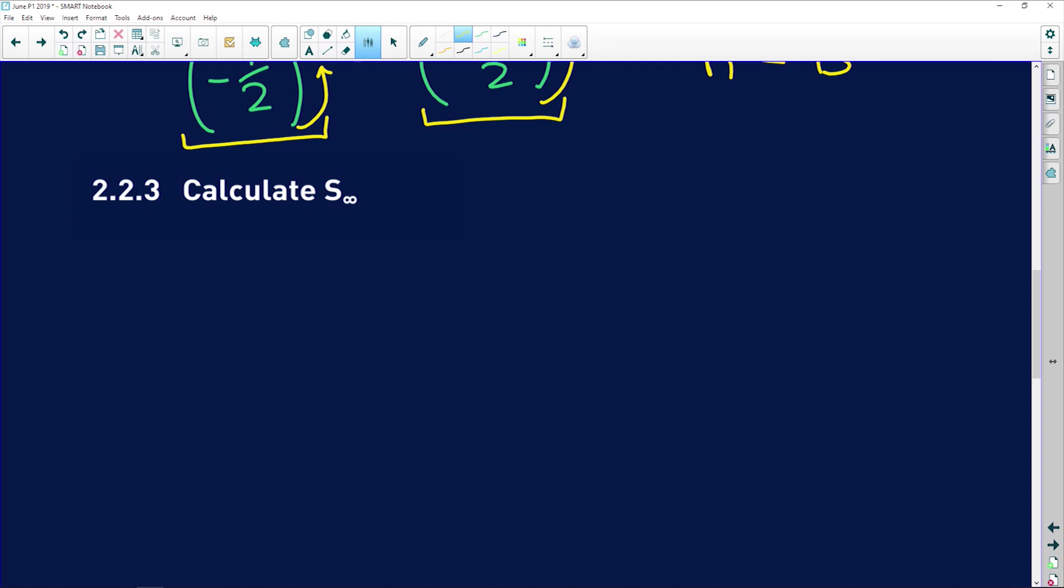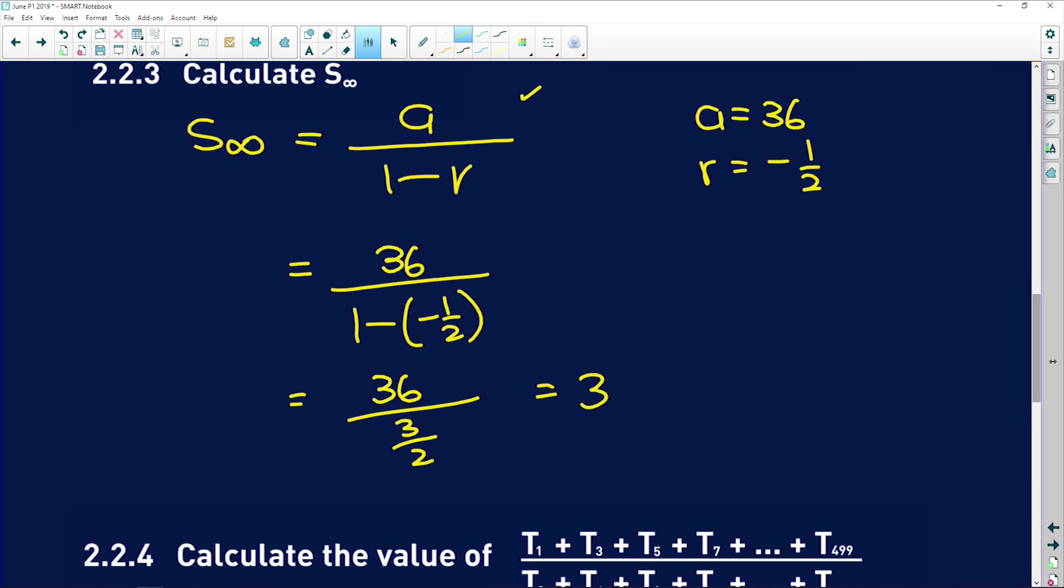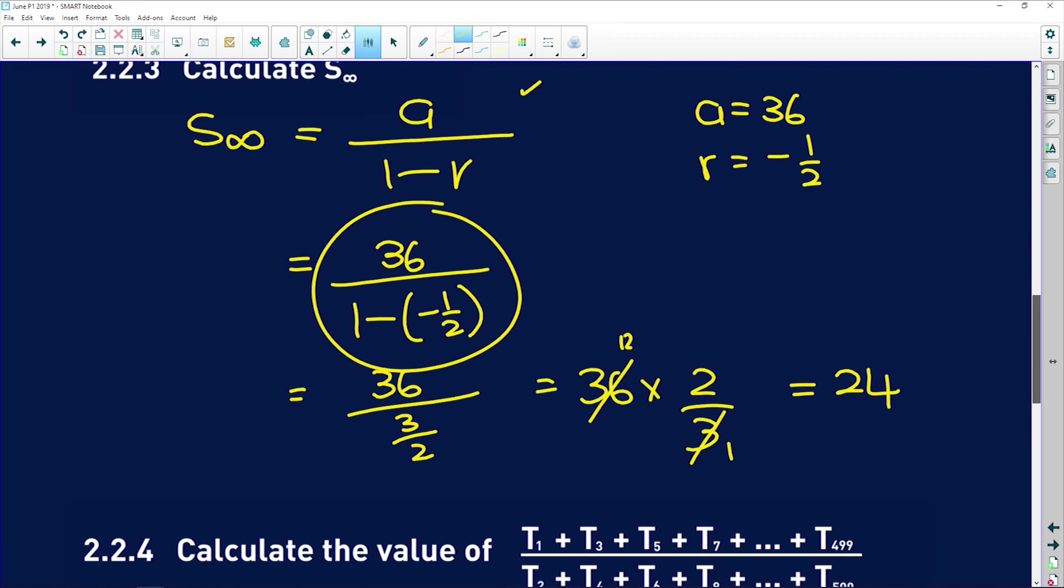So now it says calculate the sum to infinity of this. Remember, sum to infinity is given to us as a over 1 minus r, and this is on your formula sheet guys, so you don't need to memorize that. So a we know was 36, and r is negative 1 half. So easy peasy, you just substitute that in. 36 divided by 1 minus negative 1 half, which is going to give us 36 over 3 divided by 2. 3 goes into itself once, and into 36 twelve times, so we get 12 times 2, which is 24. Obviously you guys could have just plugged this whole thing into your calculator, but mental maths guys, very important sometimes.